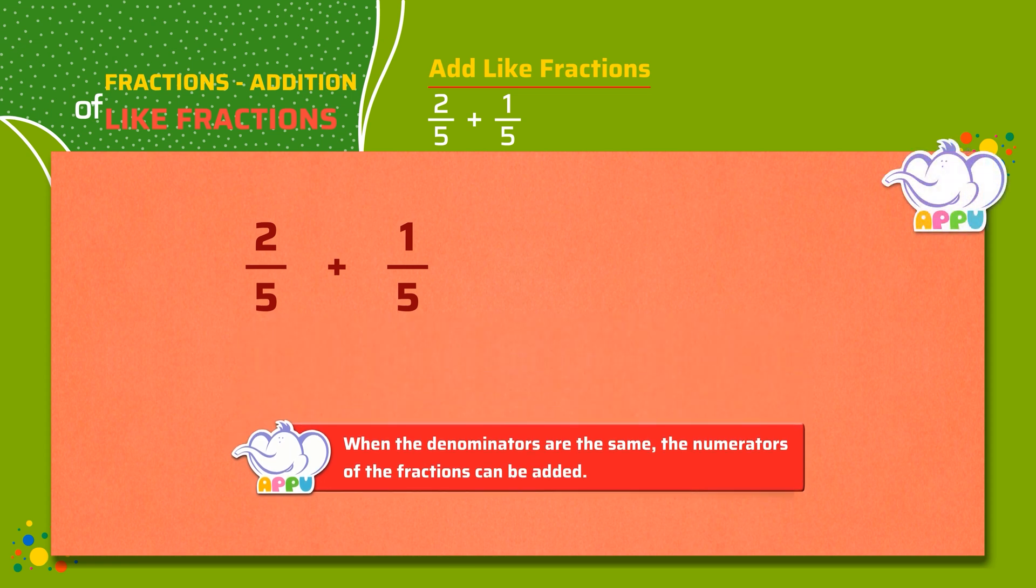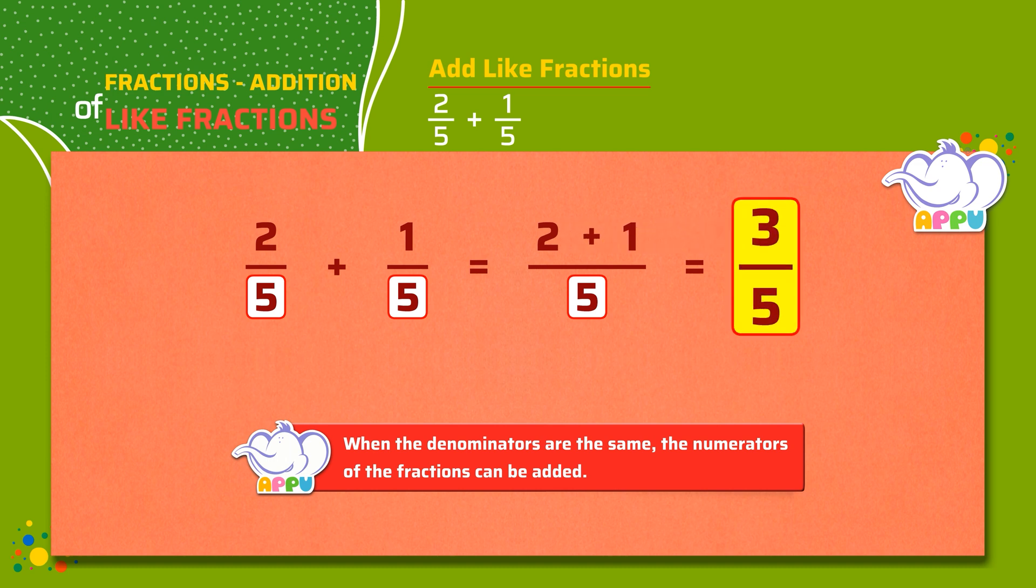We see that the denominators are the same for both the fractions. That is 5. We write the denominator as 5. And we add the numerators. 2 plus 1 equals 3. The answer is 3 by 5.